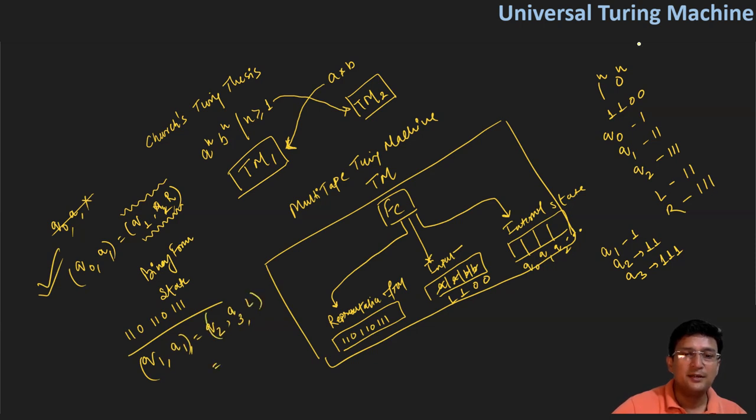So how will its representation be done? Q2 is represented by one one followed by a zero. And then a3 is represented by one one one and followed by a zero. And left is represented by one one.